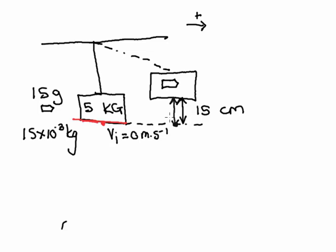The question says to use energy principles to show that the magnitude of the velocity of the block-bullet system is 1.71 meters per second immediately after the bullet struck the block. When they tell you to use energy principles, think about mechanical energy — a wooden block that was not moving and now is moving. In a closed system, mechanical energy will be conserved. We have two types: potential energy and kinetic energy.